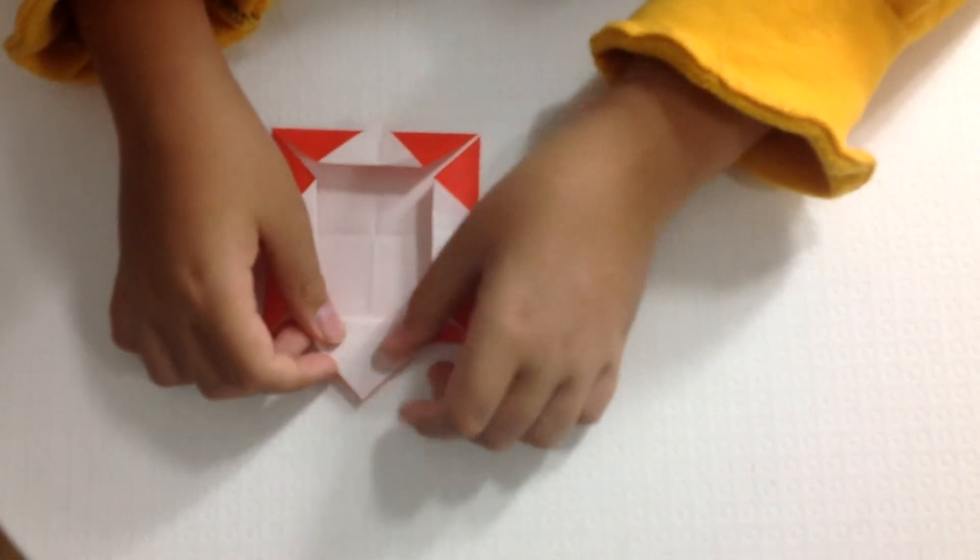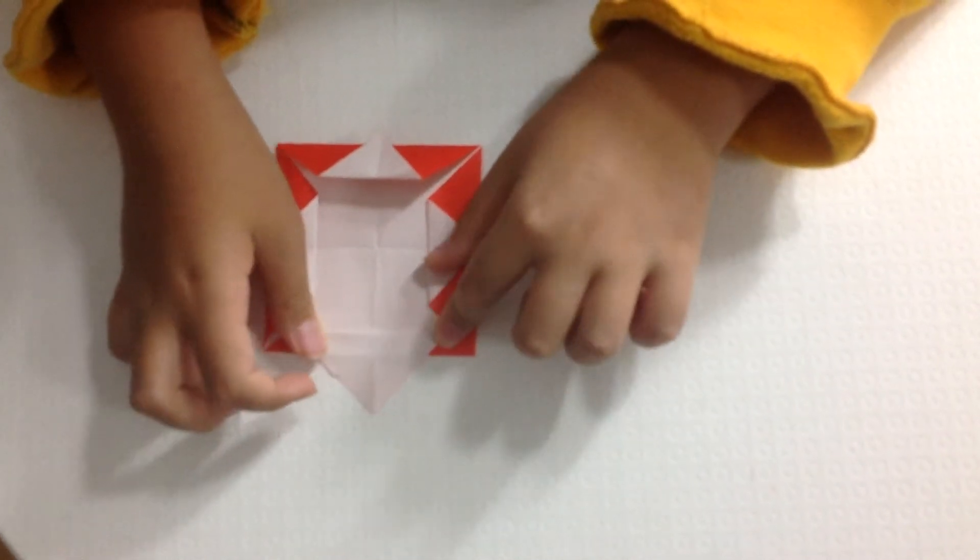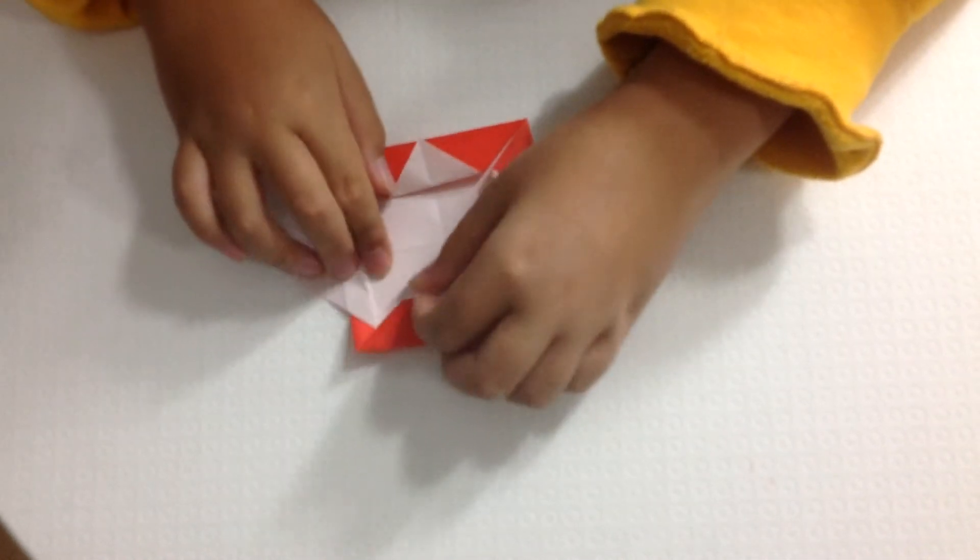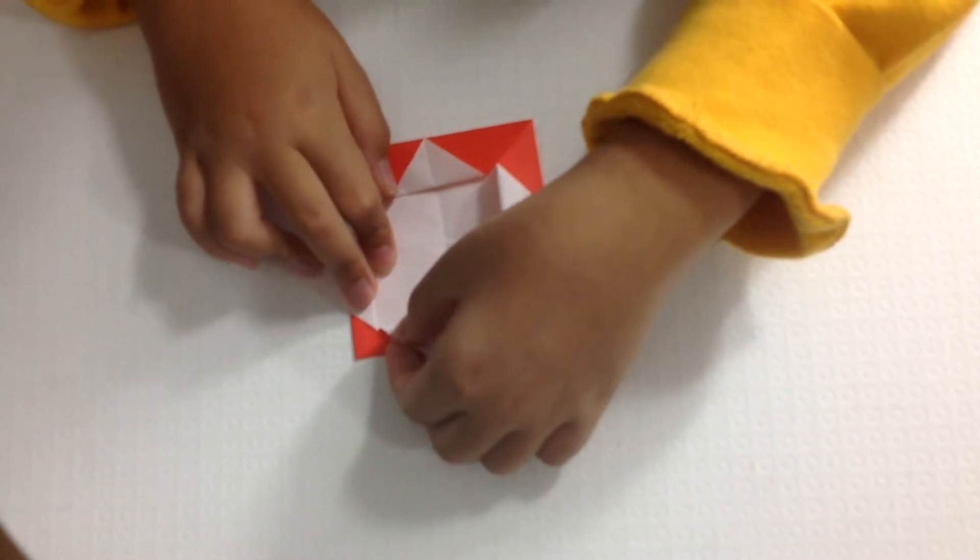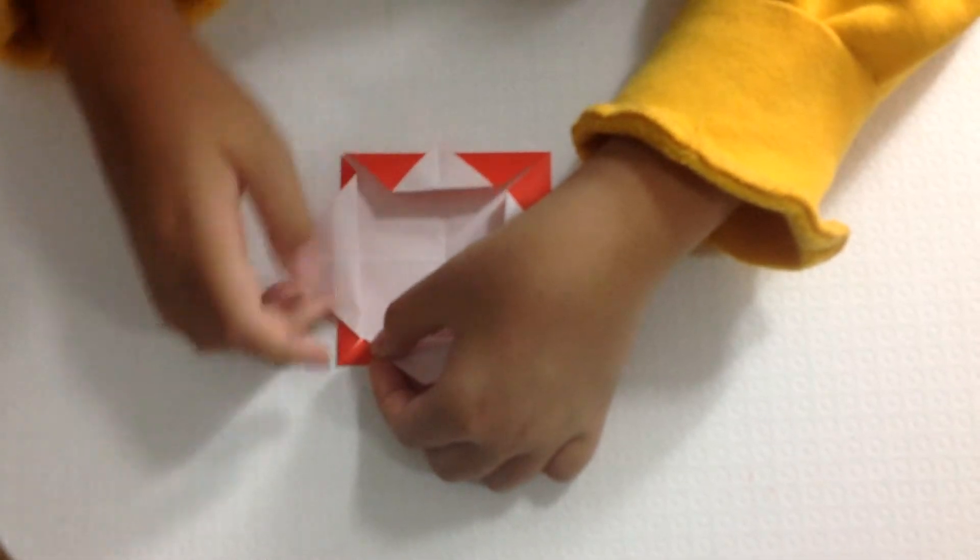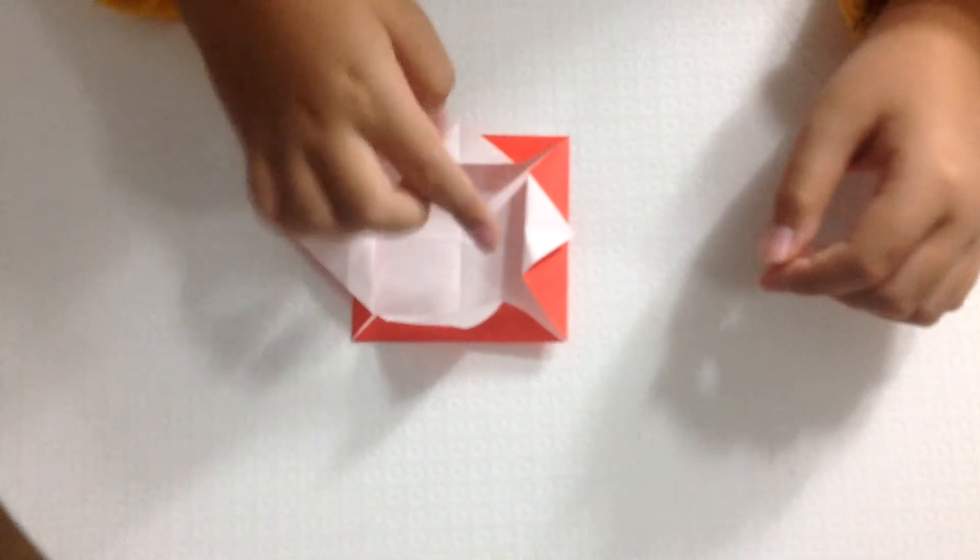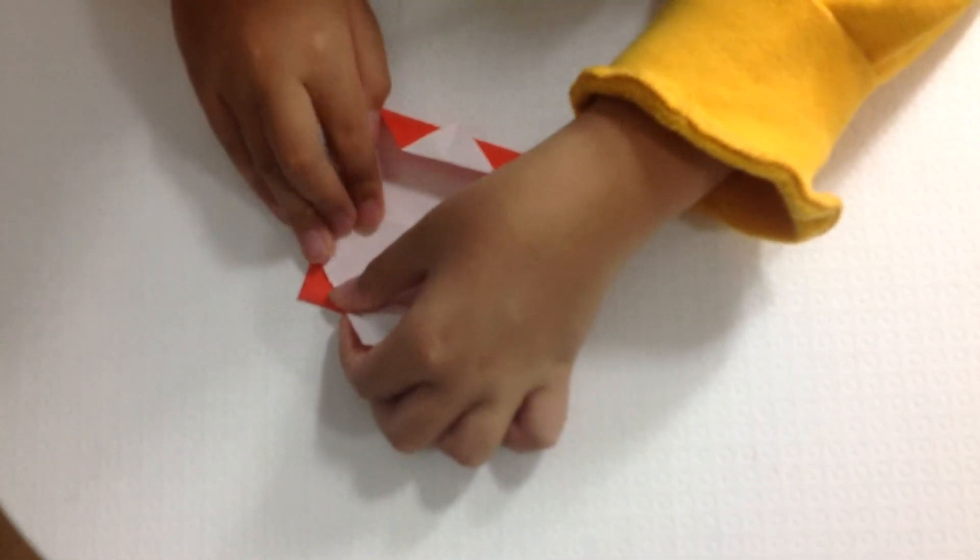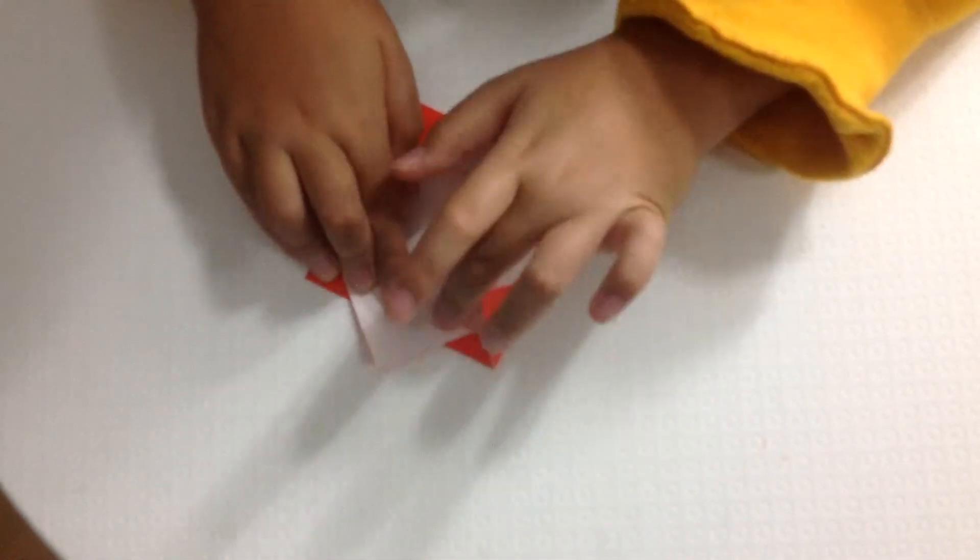Then, expand the crease and make the triangle bigger. Then, repeat, and make sure the two corners here, here, here, and here, all are level. If they're not level, it's not going to look very nice.